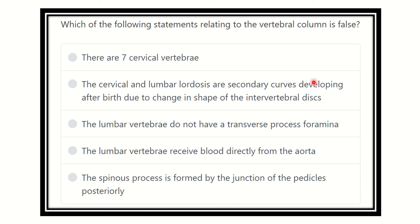Hi everyone, welcome to another question and answer session. Quiz: which of the following statements relating to the vertebral column is false? There are seven cervical vertebrae. The cervical and lumbar lordoses are secondary curvatures developing after birth due to changes in shape of the vertebral disc. The lumbar vertebrae don't have a transverse process foramen. The lumbar vertebrae receive blood directly from the aorta. The spinous process is formed by the junction of the pedicles posteriorly.